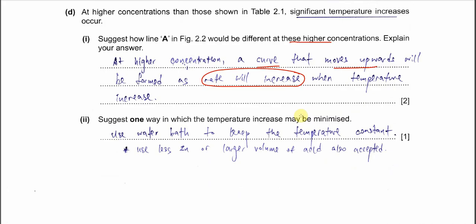Suggest one way which the temperature increase may be minimized. The standard answer is use a water bath, because the water bath can make the temperature constant. If it's too hot, the water bath can absorb the heat and make sure it's not too high temperature. Or you can use lesser zinc or use larger volume - larger volume means the water amount is more so it can absorb the heat produced when it's too concentrated. The best answer is use water bath to maintain or keep the temperature constant.